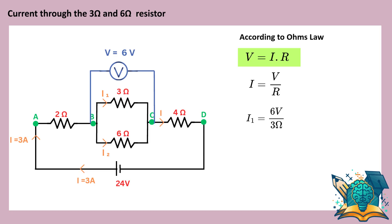Which gives us 2 amperes. Now, for I2, that's 6 volts divided by 6 ohms, which gives 1 ampere.